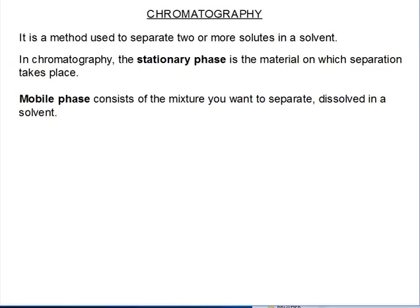There is a method used to separate two or more solutes in a solvent. When we take ink, the ink we use in writing could be made up of two or more solutes — we could mix two or more colors to get the exact color we use to write. We can separate these by using a method called chromatography. In chromatography there are two phases: the stationary phase, which refers to the material on which separation takes place, usually filter paper, and the mobile phase, which consists of the mixture dissolved in a solvent.